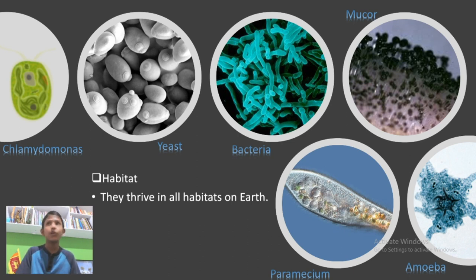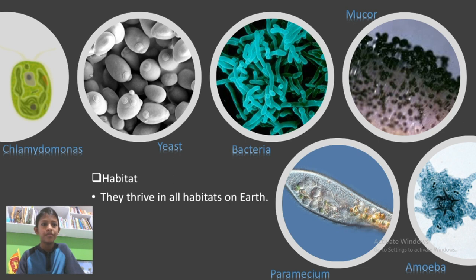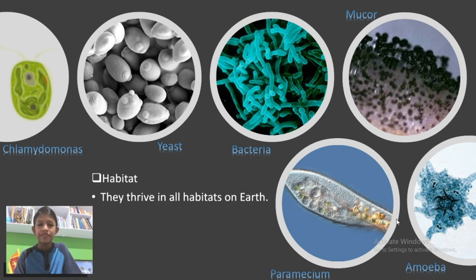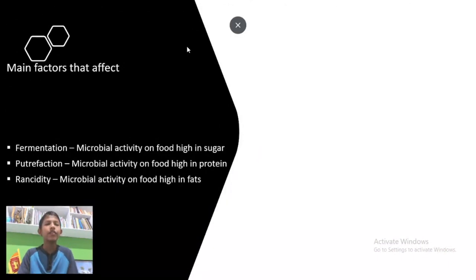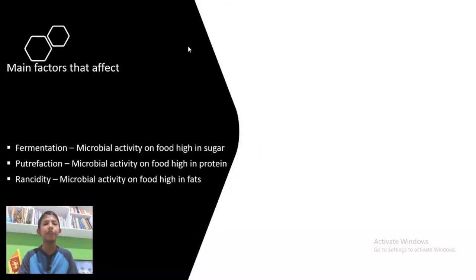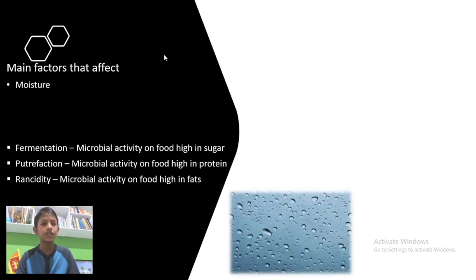Good examples of microorganism habitats are the atmosphere, water, soil, and so on — and even adverse habitats like the desert, volcanoes, and even glaciers. Here we can see some main microorganisms that scientists observe: Chlamydomonas, yeast, bacteria, mucus, Paramecium, and Amoeba.